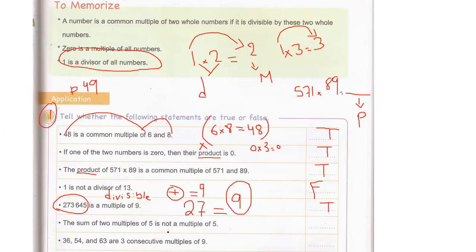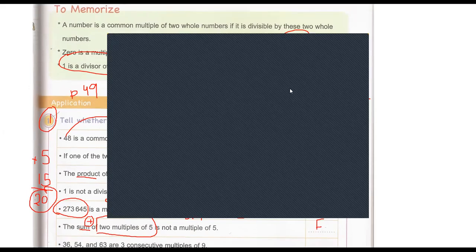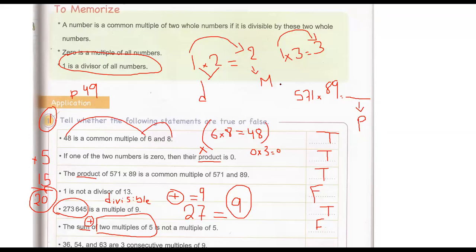The sum of two multiples of nine is not a multiple of nine — let me give you an example with multiples of five instead. Choose any two numbers in table five, for example 5 and 15. Five plus 15 equals 20. Their sum is 20, which is still in table five — it's a multiple of five. So the statement is false.